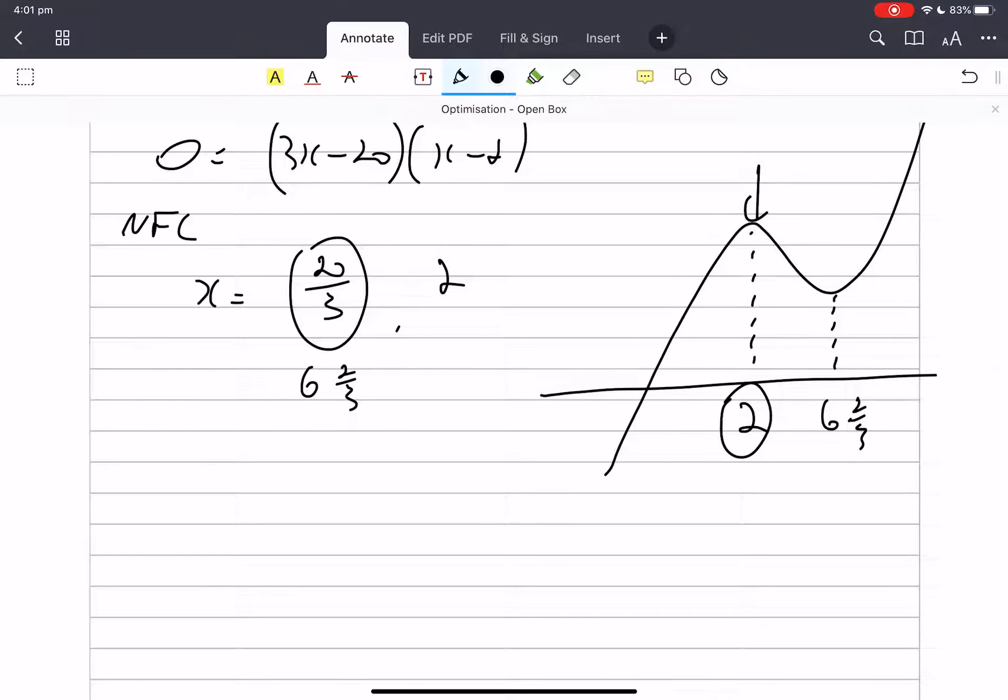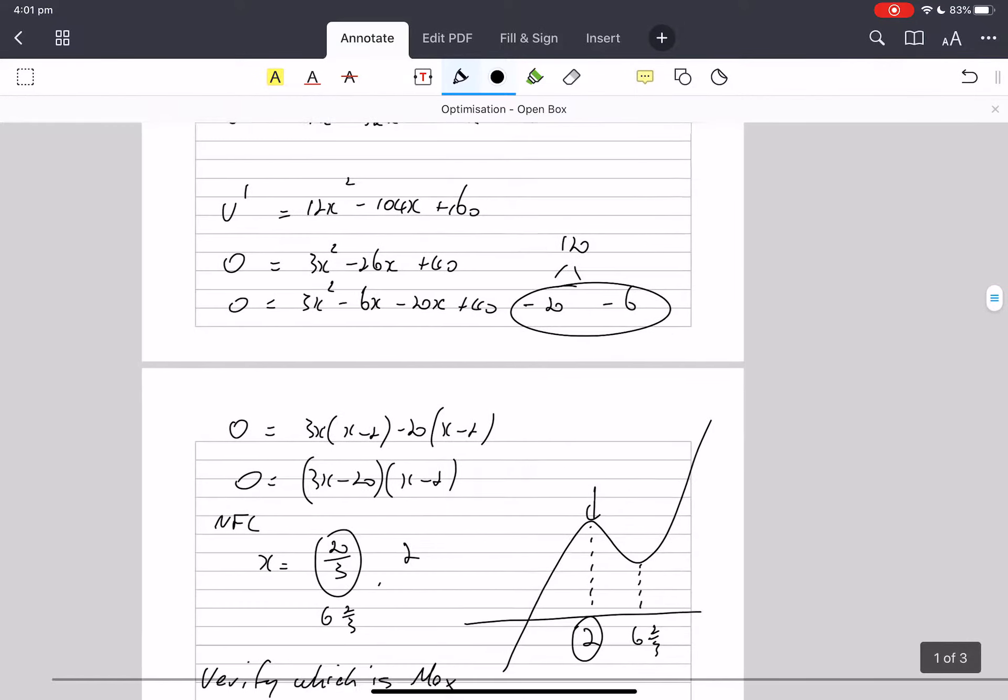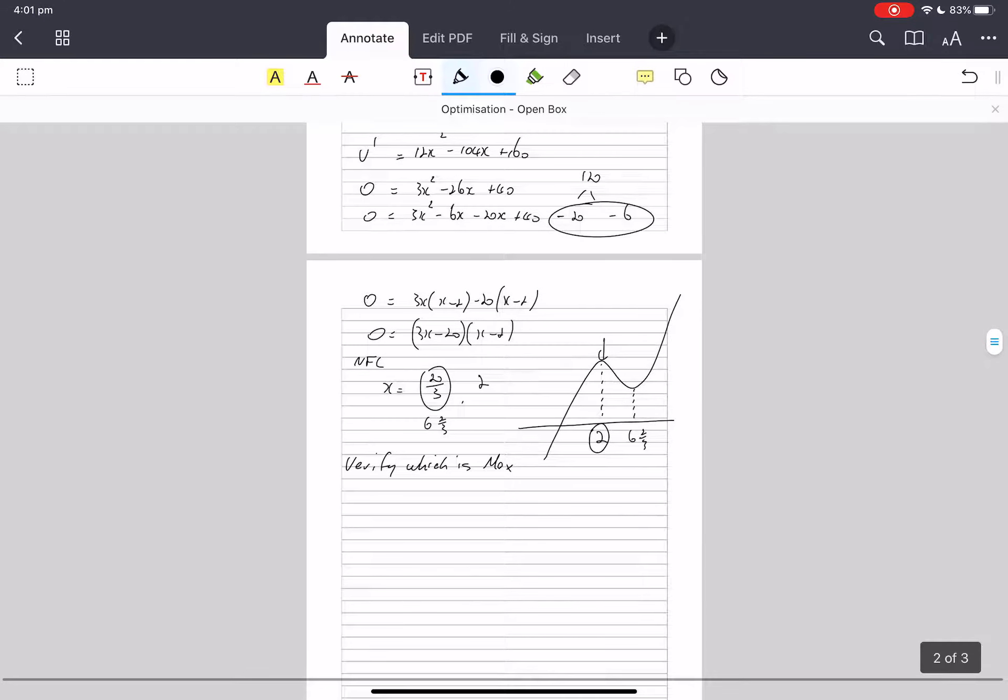So really I guess we know our largest volume is going to happen where x equals 2, but let's verify. Let's verify, which is, we're going to do that through the second derivative. So there's my first derivative. I wonder if I can get it there so I can see it. So V double dash would be 24x.